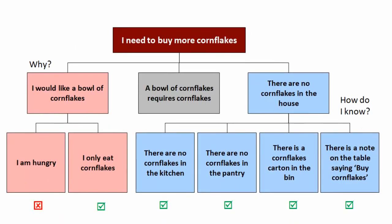I can also use the hypothesis tree to test and confirm my hypothesis. As you can see from all the supporting information at the bottom, it is true that there are no cornflakes in the house. It's also true that a bowl of cornflakes requires cornflakes. But unfortunately, my hypothesis falls down on the fact that I'm not hungry because I've just had my lunch. This is really useful because you can use it to refine your hypotheses — you might modify the hypothesis here to say, I would need to buy more cornflakes if I were hungry.